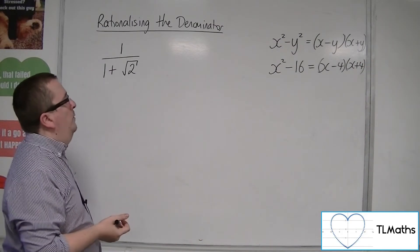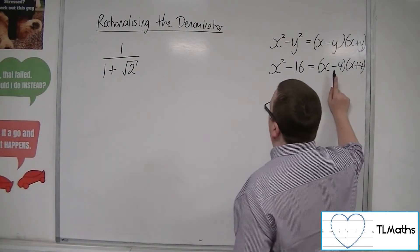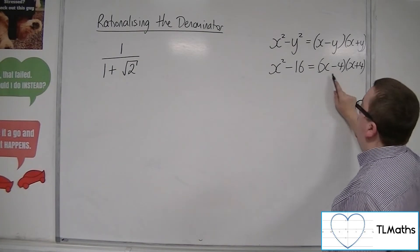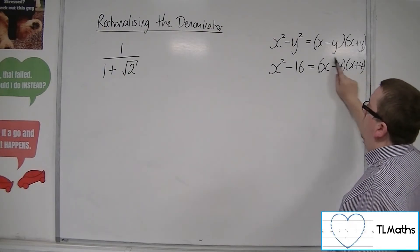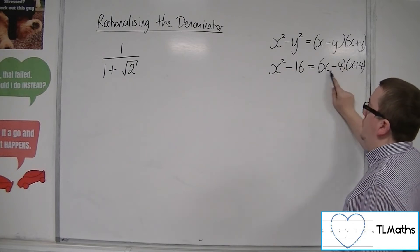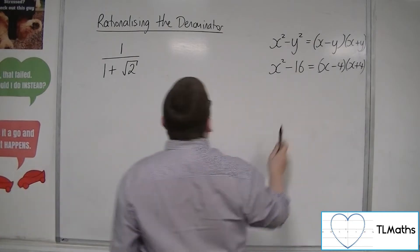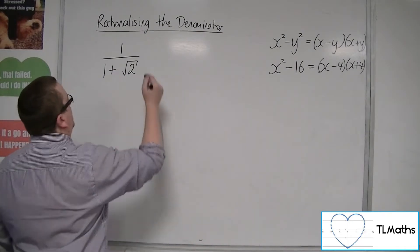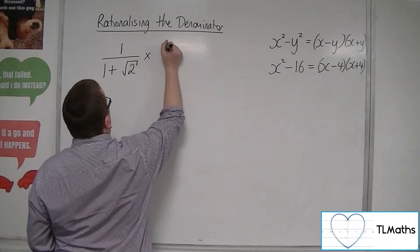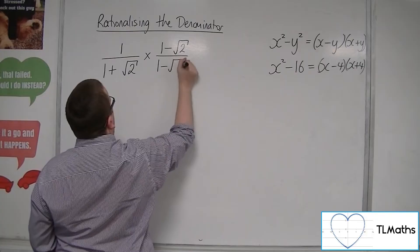So if I multiply my surd, my denominator, 1 plus root 2, by 1 minus root 2, then hopefully I should get something where the surd disappears. So let's try that 1 minus root 2 over 1 minus root 2.